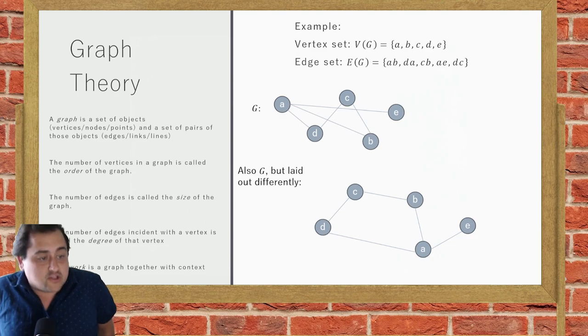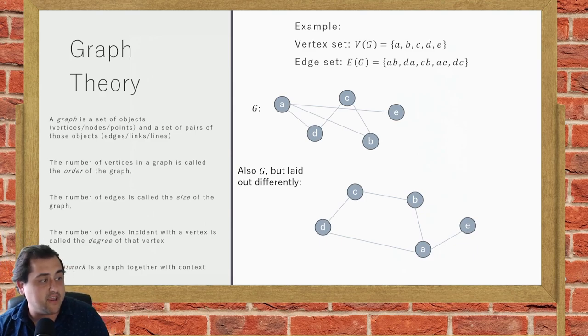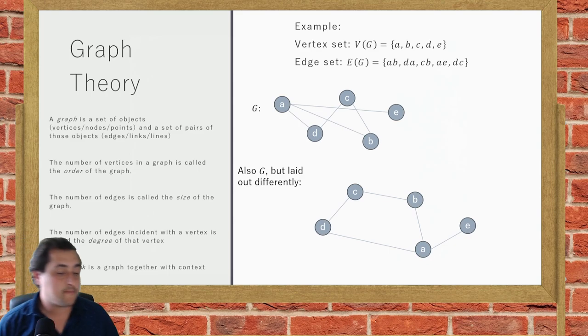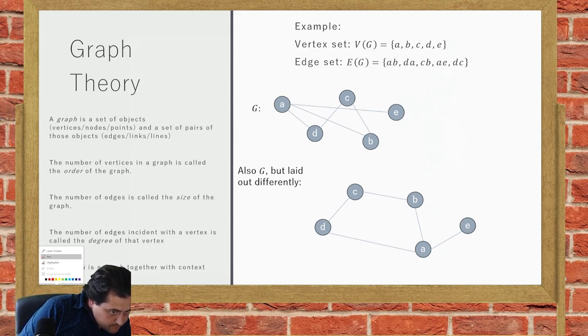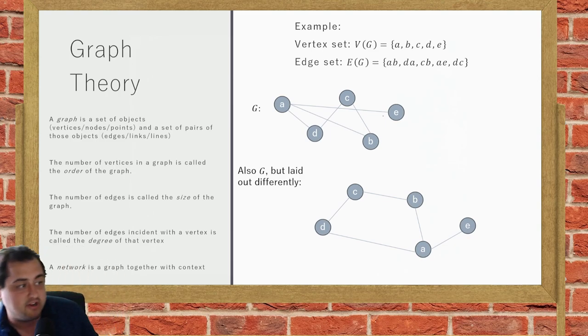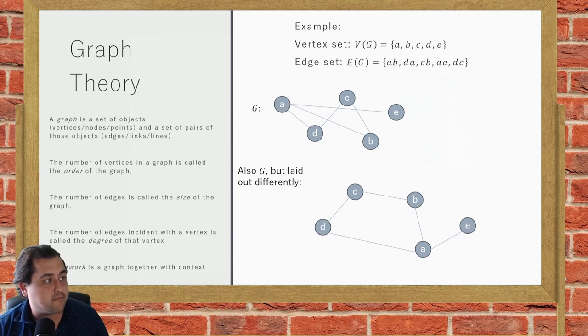A few more terms I'd like to define. The order of a graph is just the number of vertices in the graph. Here we have one, two, three, four, five vertices: A, B, C, D, E. There are five of them. So this graph G we would say has order five.